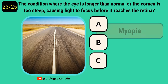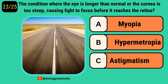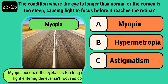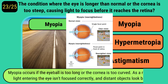The condition where the eye is longer than normal or the cornea is too steep, causing light to focus before it reaches the retina, is called? It is called myopia. Myopia occurs if the eyeball is too long or the cornea is too curved, so light entering the eye isn't focused correctly and distant objects look blurred.